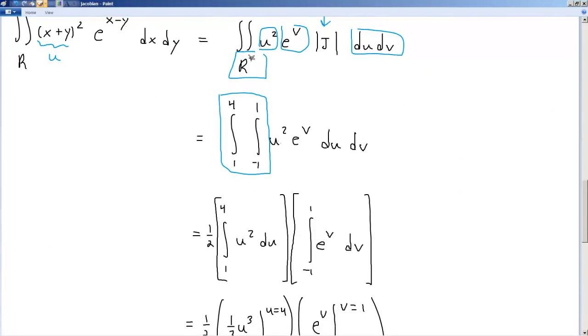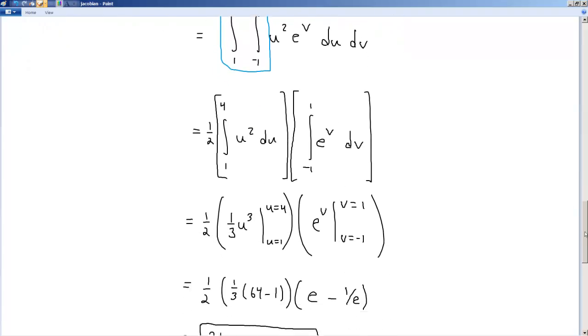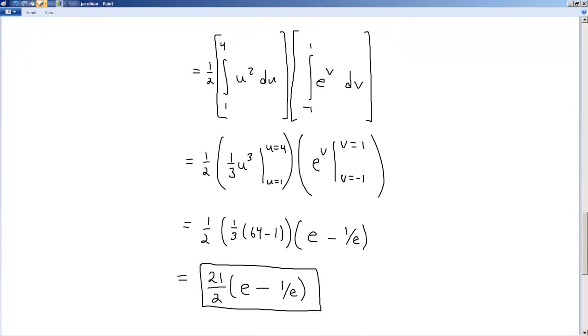Now, again, we've got a function entirely of u times a function entirely of v, so we can split it up into the product of the two integrals, both of which are very easy to solve, or they should be anyway, this is basic calculus 1, we go through and we solve them, we carry out the mathematics very carefully, and we end up with the pleasing result of 21 over 2 times e minus 1 over e, or e to the negative 1. So that's the value of our original integral.